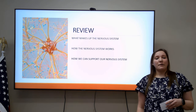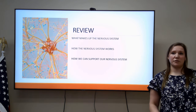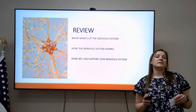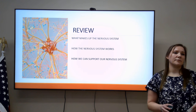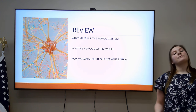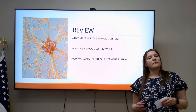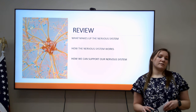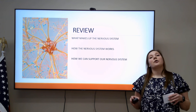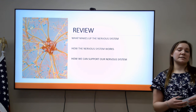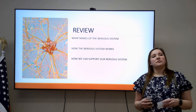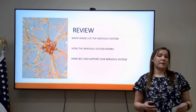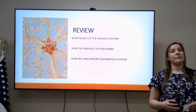As a quick recap, we talked about what makes up the nervous system — the central nervous system and the peripheral nervous system — as well as the neurons. We also talked about how those neurons send a message down the axon, and we talked about ways that we can support and keep our nervous system healthy. In conclusion, I hope I taught you a little bit more about the nervous system, and I hope that you can understand what happens in somebody with one of these neurological disorders, which makes up about 17% of the population.